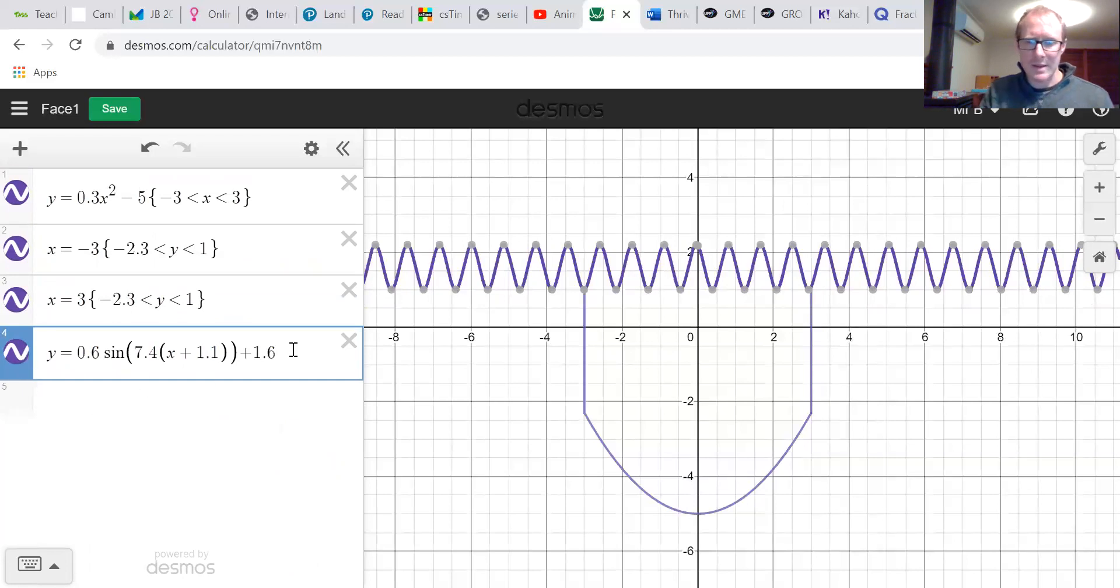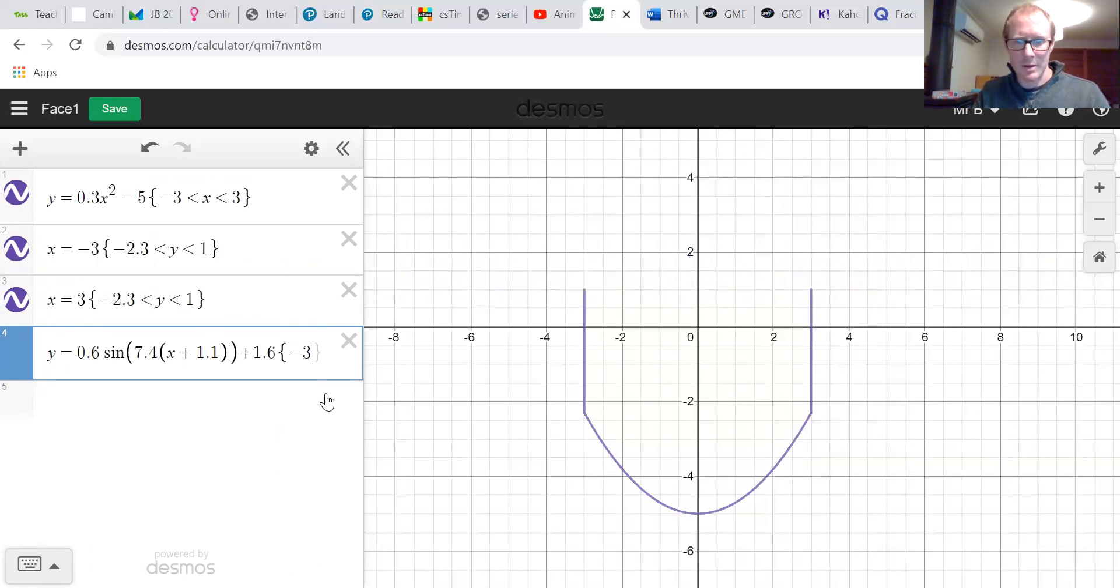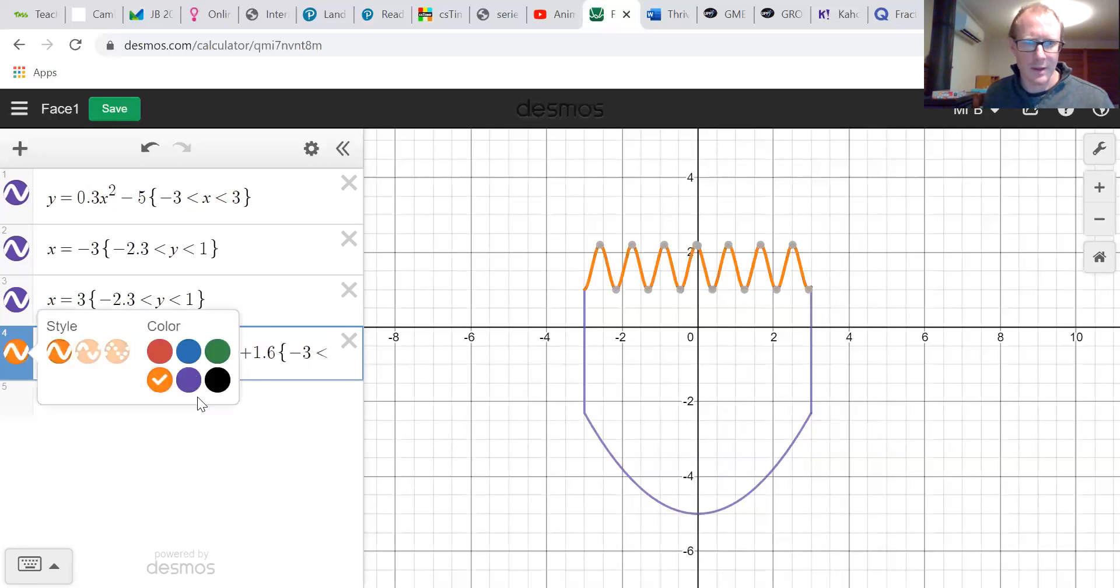But obviously that sine graph goes off forever. So I need to chop it off and we can chop it off the same as those lines before. So minus 3 is less than x, which is less than 3. There we go. Some lovely hair. And we'll make that orange, of course.